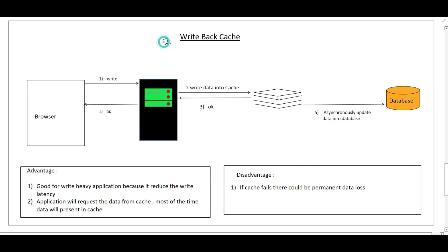The second write strategy is Write Back Cache. The browser sends a write request to the application, which first writes to the cache and immediately confirms the IO to the browser. Later, at some point in time, all the accumulated writes are asynchronously written to the database at once. The benefits: it is good for heavy write applications because it reduces write latency by collecting all writes in the cache and writing to the database in bulk. Data requested by the application will most of the time be present in the cache.